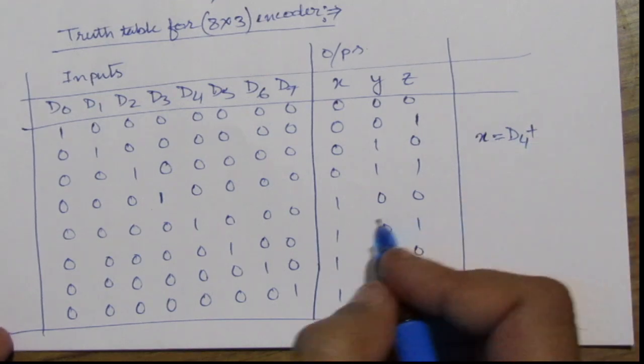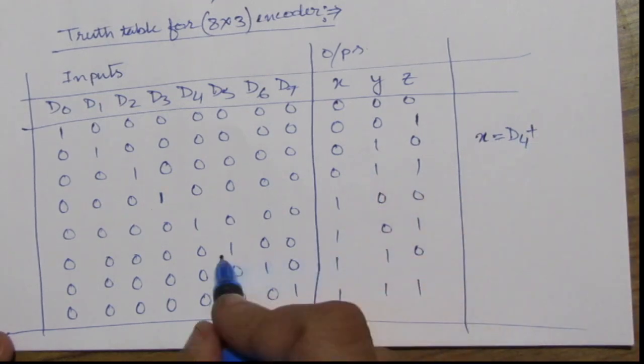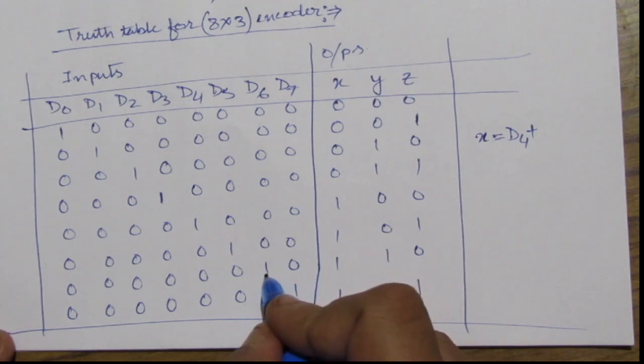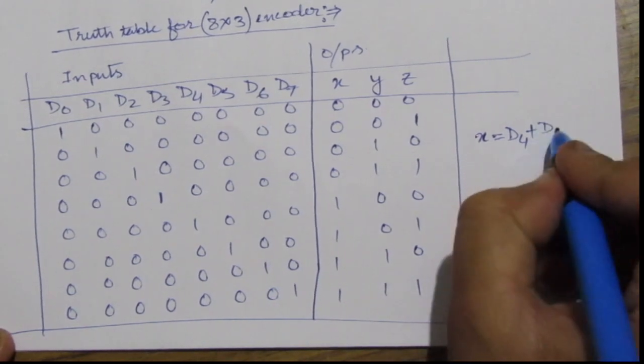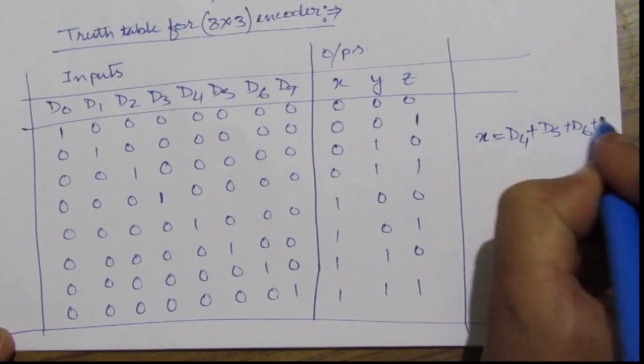we will have OR operation here. d4 then d5, d6 and d7. d5 plus d6 plus d7.